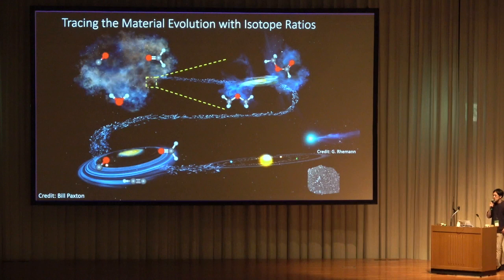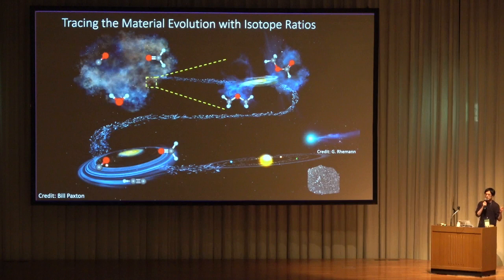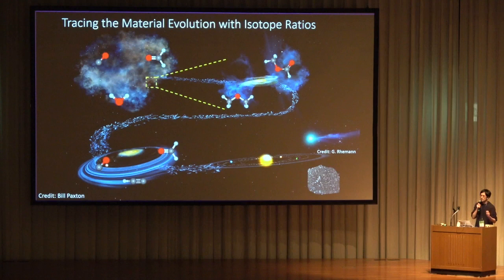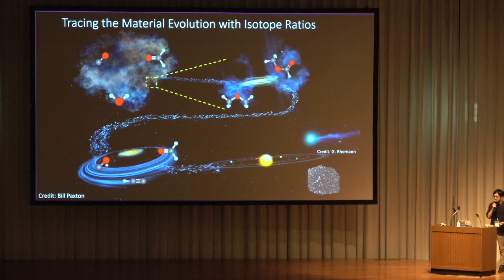Why? Because isotope ratios are kind of a fingerprint of molecular evolution. For example, by comparing isotope ratios in objects at different evolutionary stages, we can get insight into molecular evolution during star and planet formation. Since PP6, we have many new observations such as by ALMA and also new space missions such as Rosetta, and we would like to share such new observational results with you.